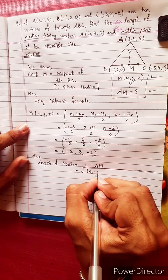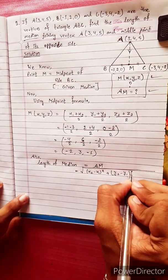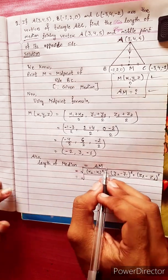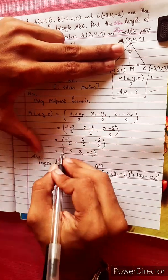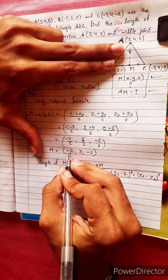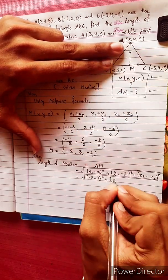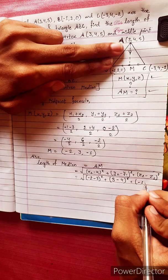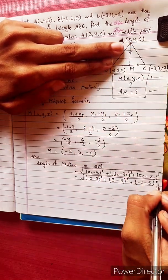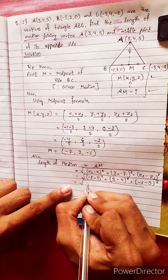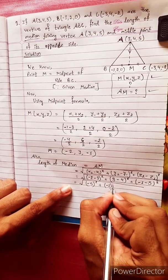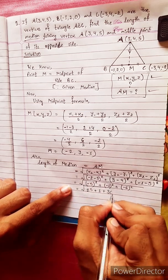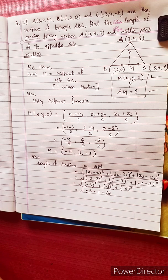Also, the length of median AM equals the distance formula: square root of (x2 minus x1) squared plus (y2 minus y1) squared plus (z2 minus z1) squared. Substituting values gives square root of (-5) squared plus (-1) squared plus (-6) squared, which equals square root of 25 plus 1 plus 36, giving square root of 62.